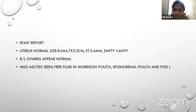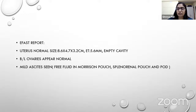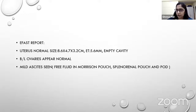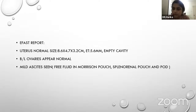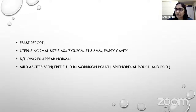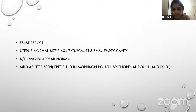The instructor asks what can be inferred from the EFAST report. The student correlates the history of missed period and left-sided abdominal pain with free fluid in the pouch of Douglas, splenorenal pouch, and Morrison's pouch, suggesting a ruptured ectopic pregnancy with hemoperitoneum. However, the instructor notes that no ectopic mass was mentioned on the scan — uterus is normal size, ovaries are normal, and only mild ascites is seen.